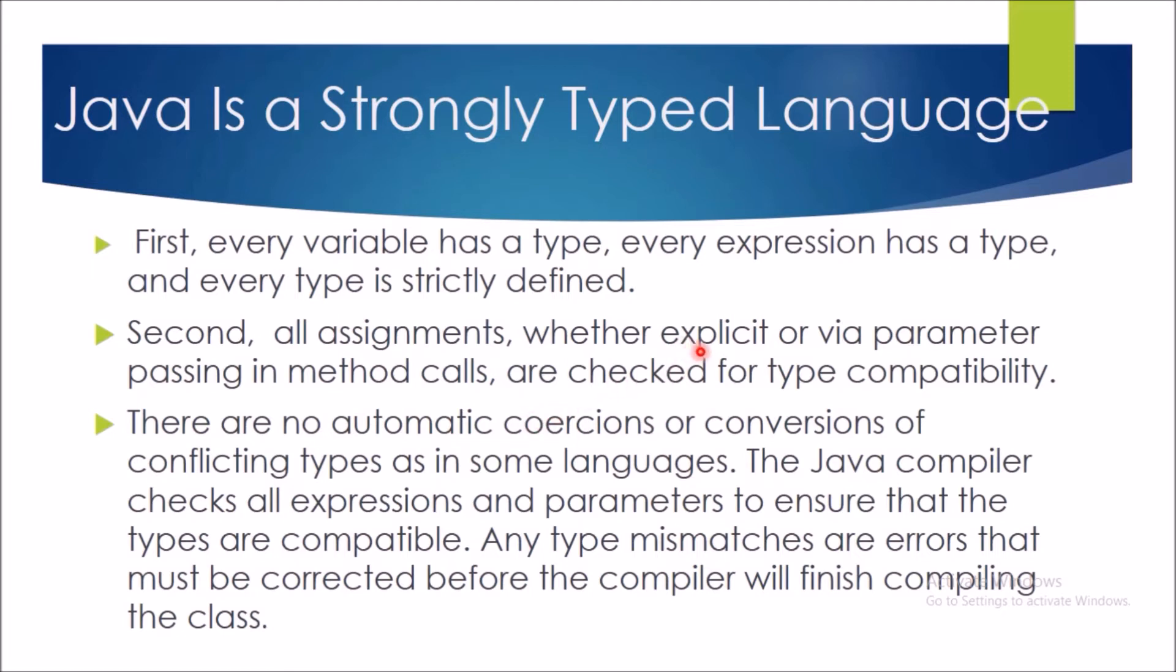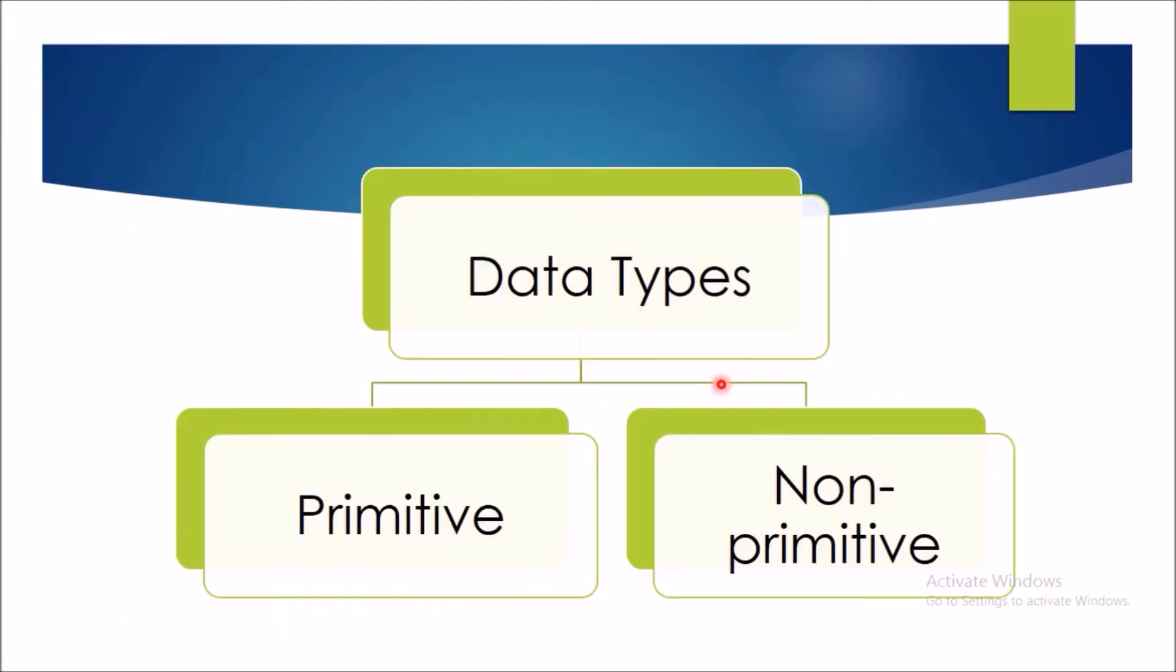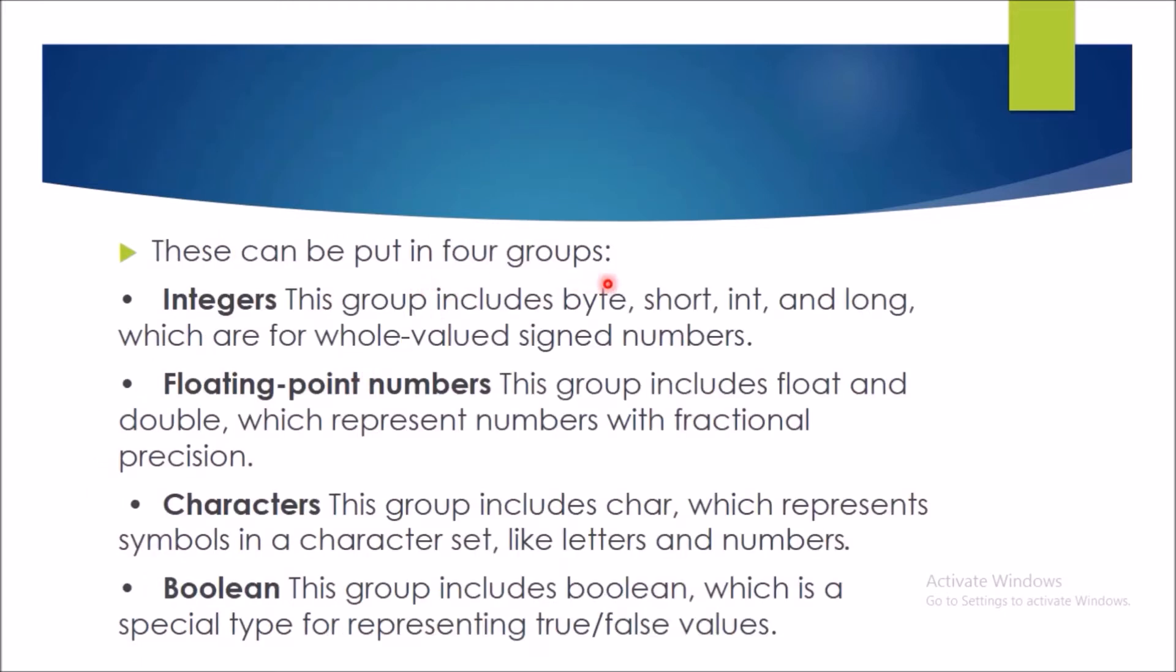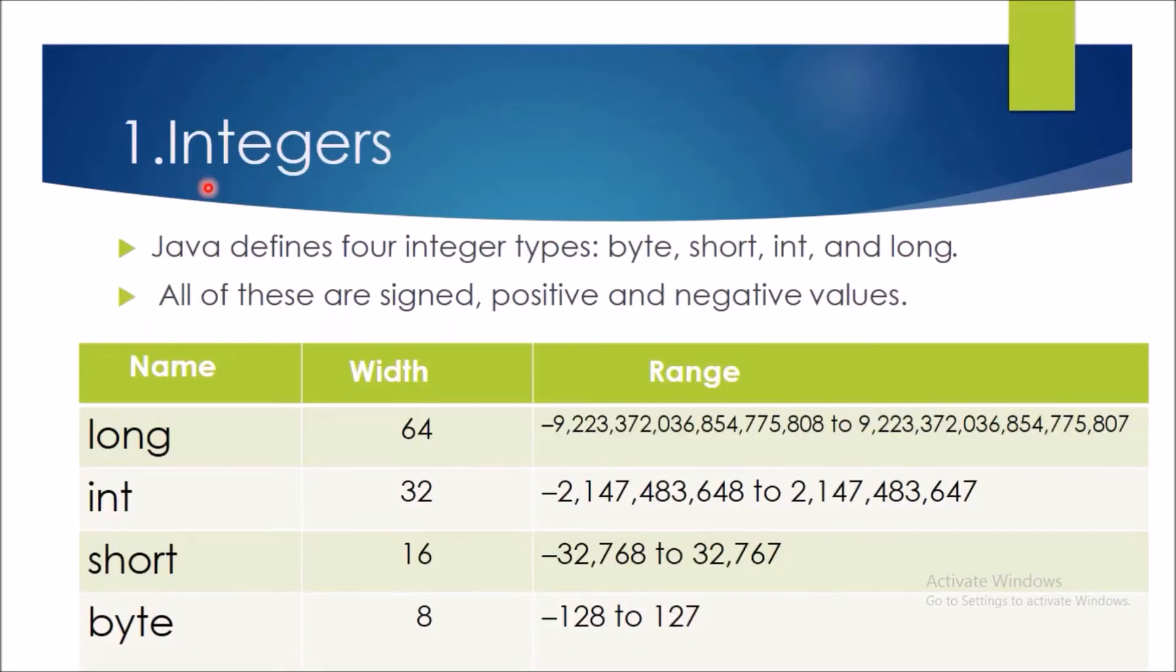So, if our data types are considered, then data types are of two types. First one is primitive and second one is non-primitive data types. So, let us consider the primitive data type first. There are eight types of the primitive data types which are defined inside the Java. Byte, short, int, long, char, float, double and boolean. But if we want to divide them into the broader categories, then there are four types of data types. First one is integer, second one is floating point number, third one is character and fourth one is boolean. So, first one is integer, we will learn about the integer.